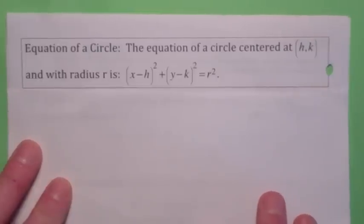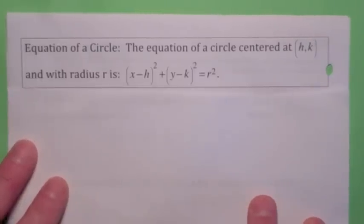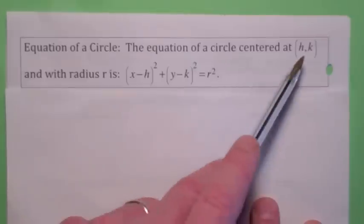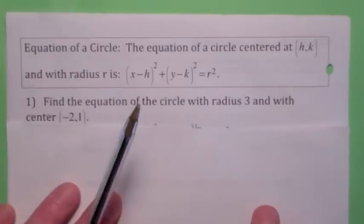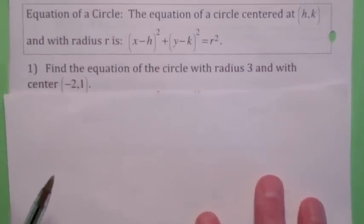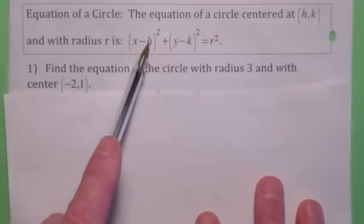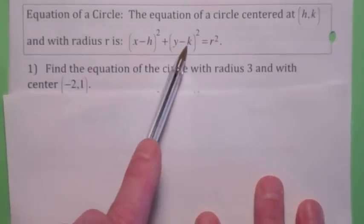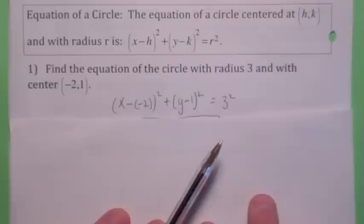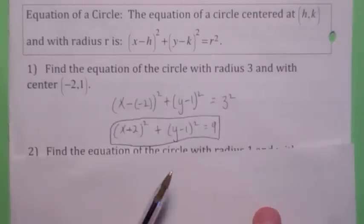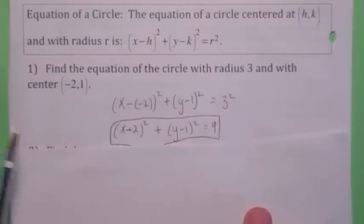The question is, what information do you need to find the equation of a circle? In general, you need the center and a radius. So if you're given the center and a radius, you just plug them in: plug in negative 2 for h, 1 for k, and 3 for r. Notice this becomes (x plus 2) squared. You don't have to multiply it out — you can leave it in that form.